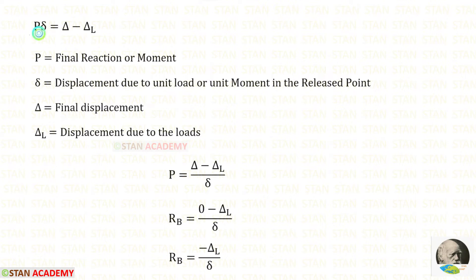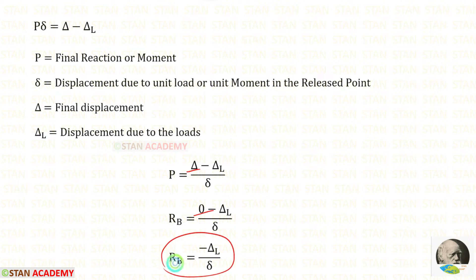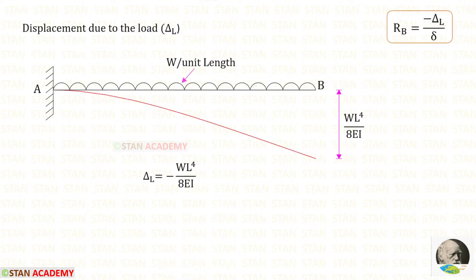RB is equal to delta minus delta_L, all divided by delta. We can take delta on the other side — it will come in the denominator. In the beam, initially at point B there is no settlement, so delta is zero. So for RB we are getting minus delta_L upon delta. Now let us find delta_L.